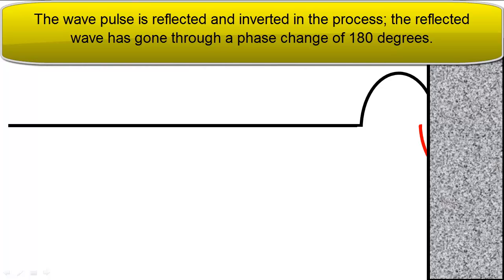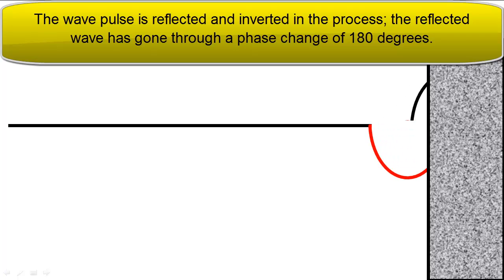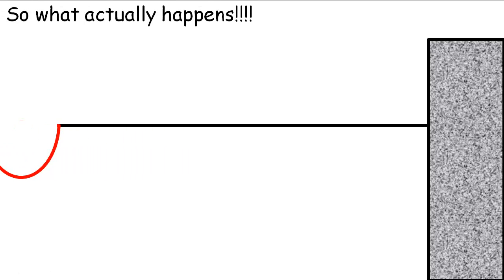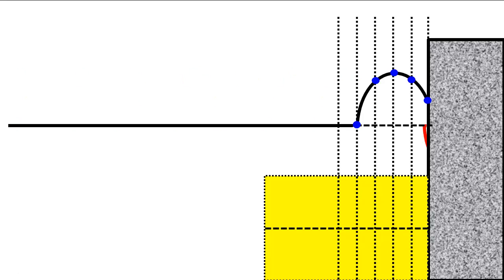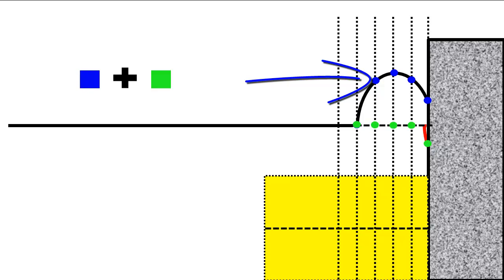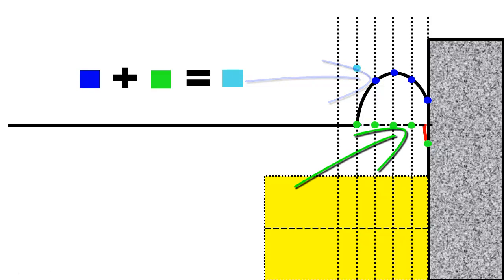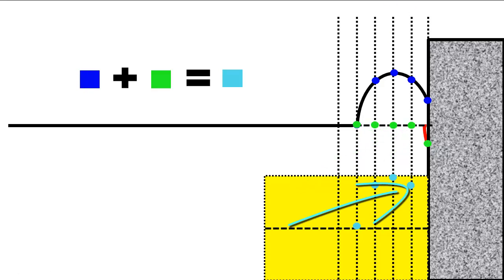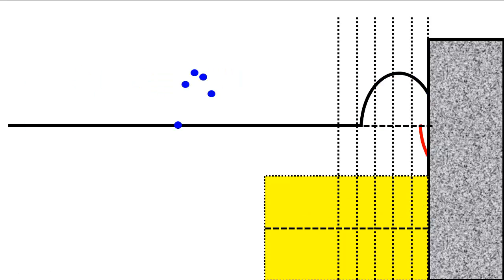In the animation we see a black pulse coming in and a red wave being reflected. What actually happens is some kind of addition of the waves in between. If we put the blue dots to represent numerical values for the incoming wave, the green dots would be the numerical values for the reflected wave, and these turquoise dots will add up to what you actually see on the spring.